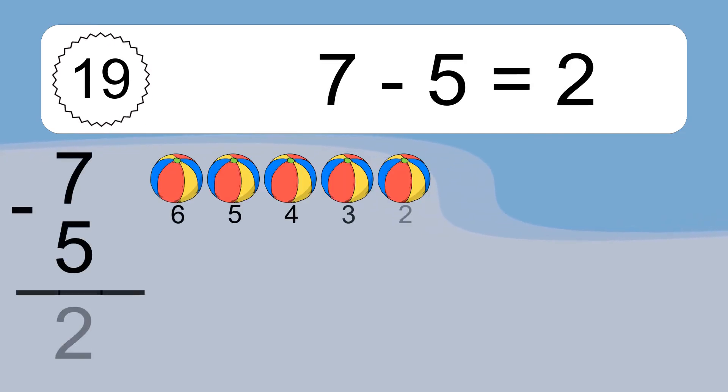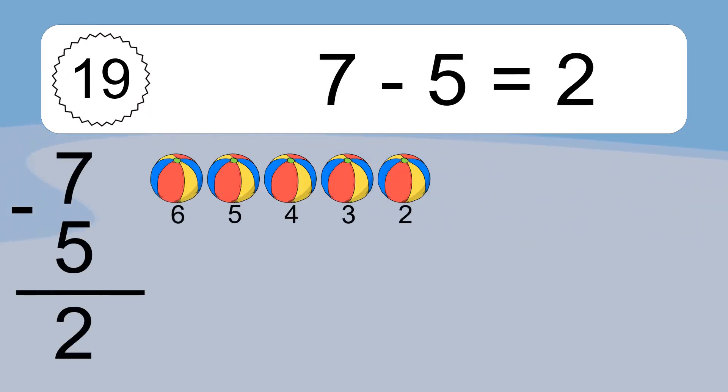16 minus 5 equals what? 16 minus 5 equals 11. Let's count it: 15, 14, 13, 12, 11.